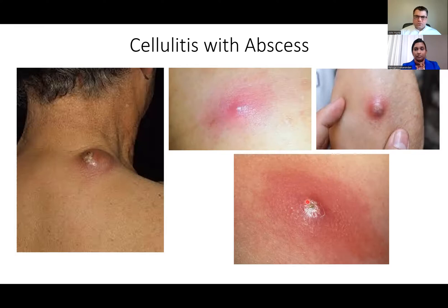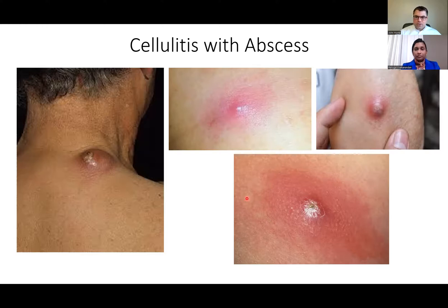If there's a large amount of surrounding cellulitis, you'd give — of course — usually five to seven days of antibiotics to make sure that the cellulitis doesn't continue to spread.